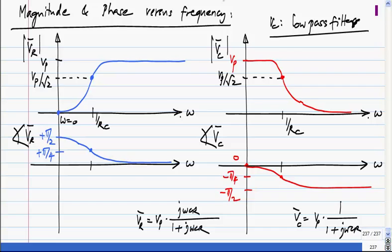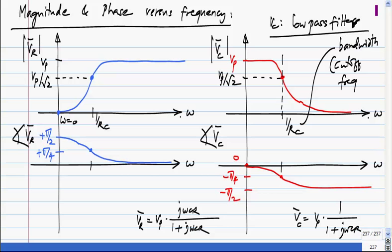Ideally you would like to allow signals completely up to some frequency and then completely block after that, but no real circuit can do that. The frequency 1/RC is the boundary between what is being allowed and what is not — although it is continuous, it does not abruptly switch. This 1/RC is known as the bandwidth or cutoff frequency of the low pass filter.